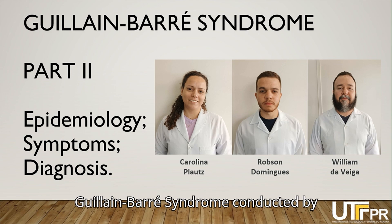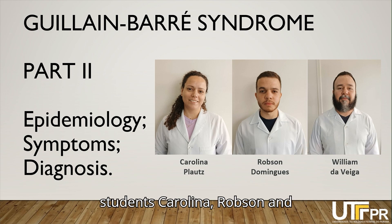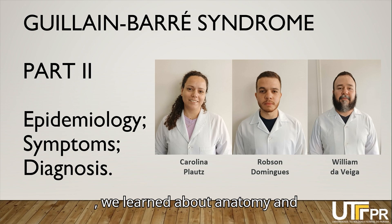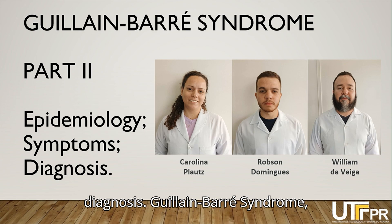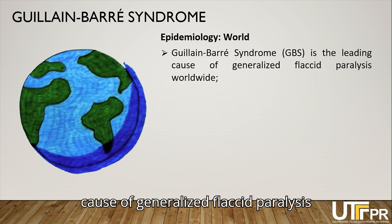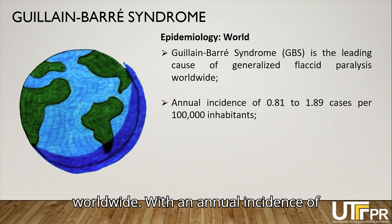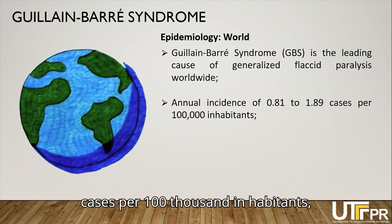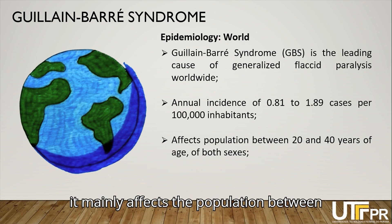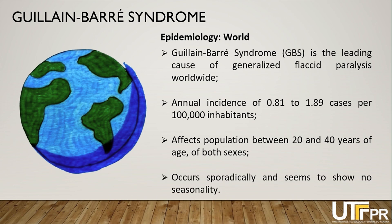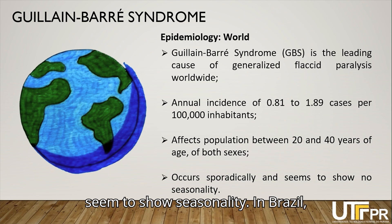This is part 2 of the video on Guillabar Syndrome conducted by students Carolina, Robson, and William for the anatomy course. In part 1, we learned about anatomy and definition. Now we will explore epidemiology, symptoms, and diagnosis. Guillabar Syndrome, also known as acute polyradiculoneuritis, is the leading cause of generalized flaccid paralysis worldwide, with an annual incidence of 0.81 to 1.89 cases per 100,000 inhabitants. It mainly affects the population between 20 and 40 years of age of both sexes, and cases occur sporadically without apparent seasonality.